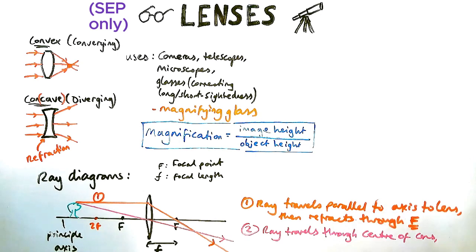So it travels through the centre of the lens and you've got to make sure it keeps going. You can't make it stop at any point. Draw an arrow on it as well to make sure the examiner knows you know what you're talking about.